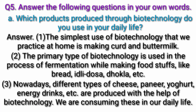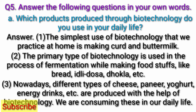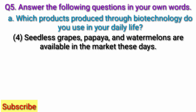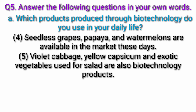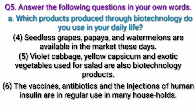Nowadays, different types of cheese, paneer, yogurt, energy drinks etc. are produced with the help of biotechnology, and we are consuming these in our daily life. Seedless grapes, papaya and watermelons are available in the market. Violet cabbage, yellow capsicum and exotic vegetables used for salad are also biotechnology products. The vaccines, antibiotics and injections of human insulin are in regular use in many households.